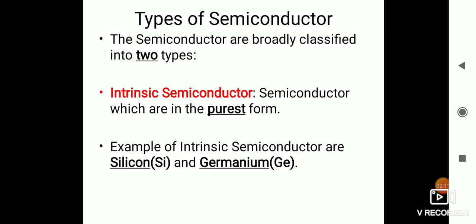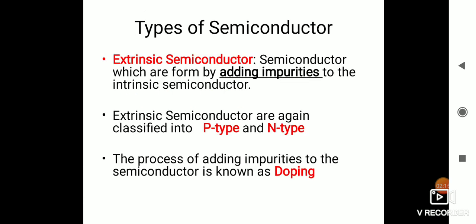What is the extrinsic semiconductor? The semiconductor which is formed by adding impurities to the intrinsic semiconductor. For example, if we have a pure semiconductor and we are adding some impurity to it, then it will become an extrinsic semiconductor. The extrinsic semiconductor is again classified into two types: P-type and N-type. The process of adding impurities to the pure semiconductor is known as doping.